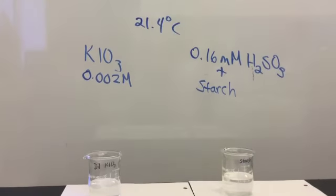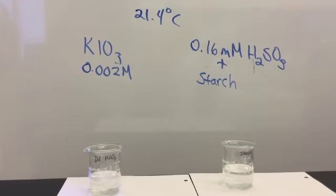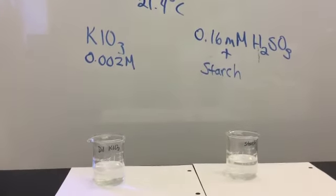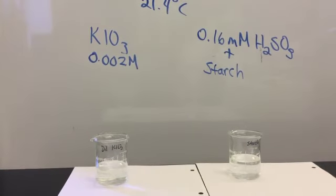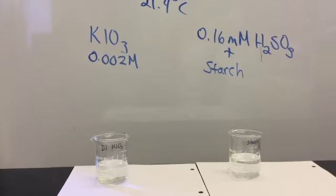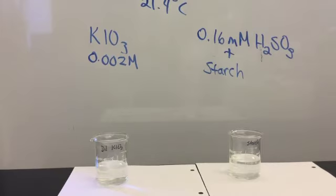Now we're going to look at a reaction where we've diluted the potassium iodate. The concentration is now 0.002 molar, which is about one-third of what it was before. We are still working at room temperature.